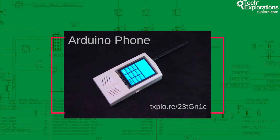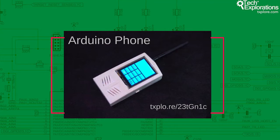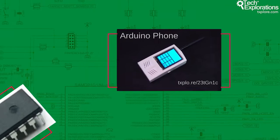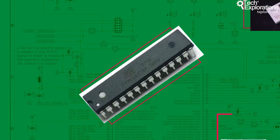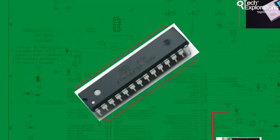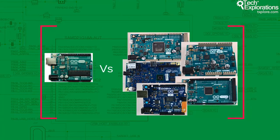I must apologize for using the term 'advanced' in the title of this course and not including the Arduino Uno in the lineup of advanced boards. You can do amazing things with the Arduino Uno and with its relatively humble 8-bit microcontroller, the ATmega 328P. By using the term advanced, I wanted to emphasize the much greater potential of Arduino Uno's younger cousins.